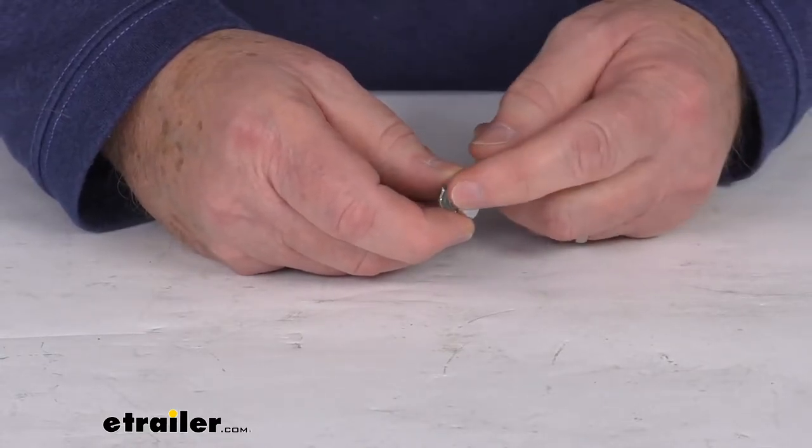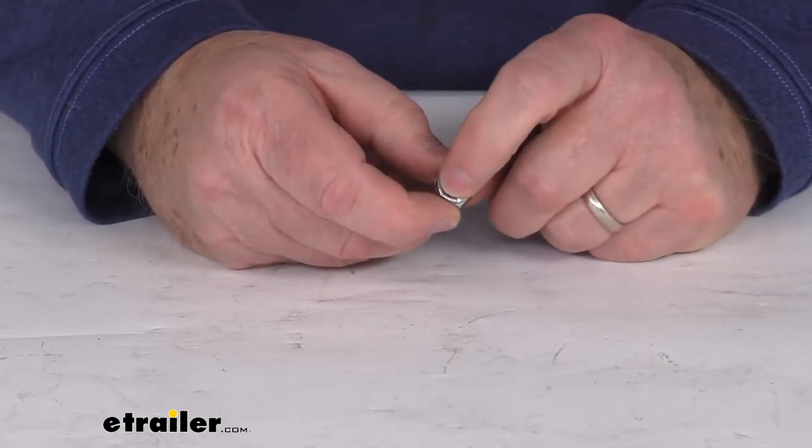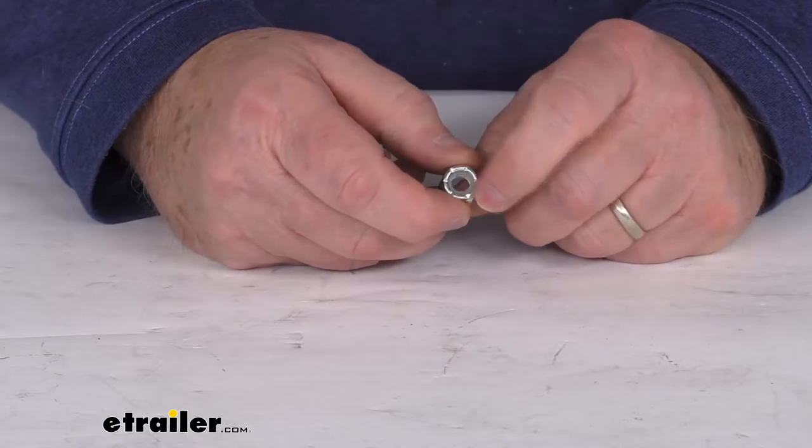This is a nylon lock nut which will secure the suspension bolt on the trailer. The nylon insert will reduce vibrations between the nut and the bolt.